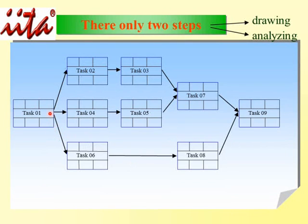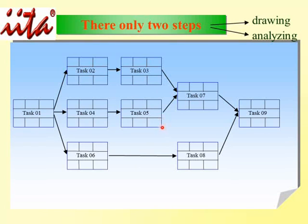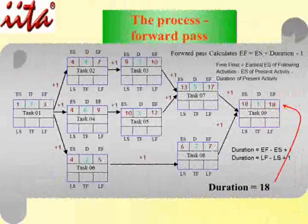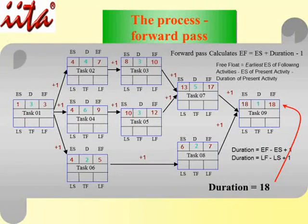In the diagram, Task 1 completes, then Tasks 2, 4, and 6 start. Task 3 depends on Task 2, Task 5 depends on Task 4, and Tasks 3 and 5 must both be completed before Task 7 starts. Task 8 depends on Task 6, and both Task 7 and Task 8 must complete before Task 9 is completed.